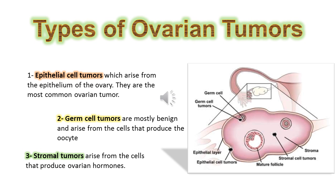Types of ovarian tumors: epithelial cell tumors arise from the epithelium of the ovary and are the most common ovarian tumor. Germ cell tumors are mostly benign and arise from the cells that produce the oocyte. Stromal tumors arise from the cells that produce ovarian hormones.